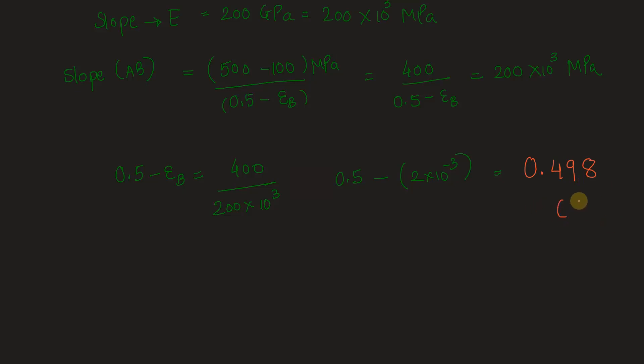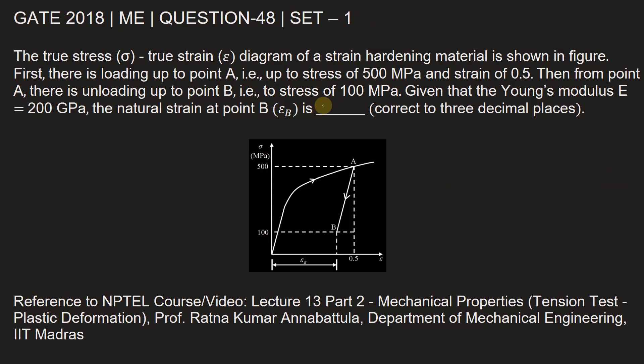Strain value at point B, that is εB, is 0.498. Natural strain at point B is 0.498.